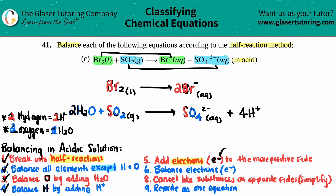Now we balance charges by adding electrons — electrons are e⁻, they're negative — and we always add them to the more positive side. We draw a barrier and compare one side of each half reaction with the other, looking at the charge in the upper right-hand corner. For the top reaction, Br₂ liquid has no charge, so it's neutral — overall charge on that side is zero.